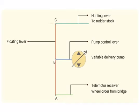The hunting gear mechanism in the steering gear system is a feedback mechanism which transmits the position of the rudder to the pump control lever through the floating lever.